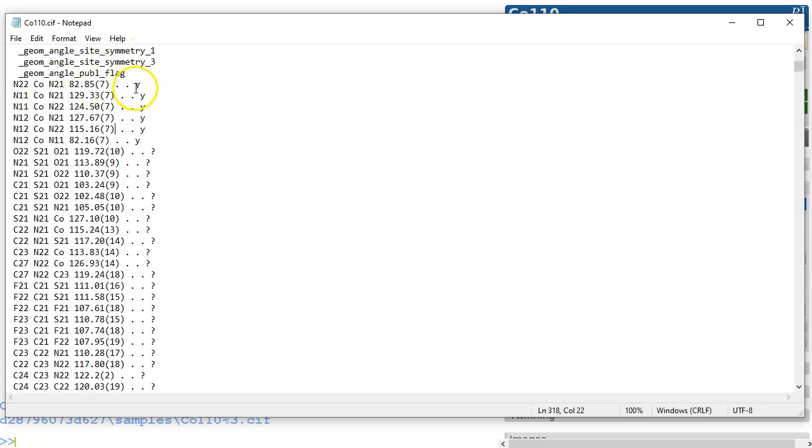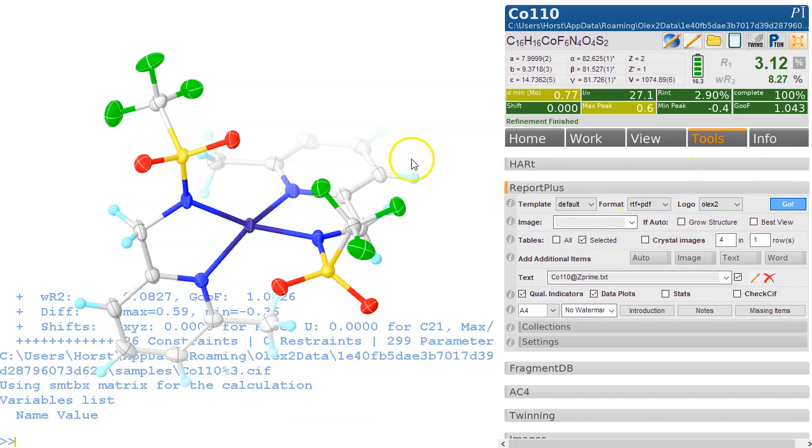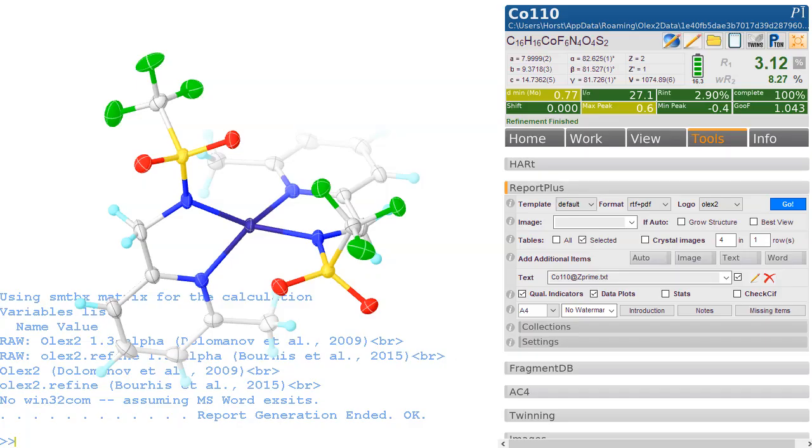These angles are flagged, and so on the distances. This goes through to all the tables. So if you now run report plus and look at the output here, you will find that at the end of the output,